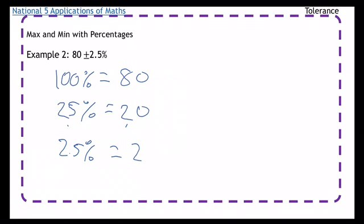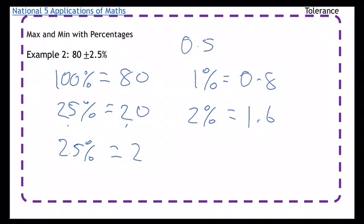So if I find 1 percent, that would be 0.8. So then 2 percent would be 1.6, and then half percent would be half of 1, which would be 0.4. Then you could just add those two things together and that would also get you 2.5. So there are a couple of ways to do that bit.